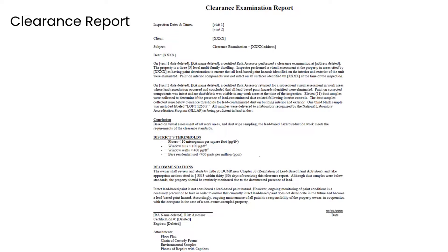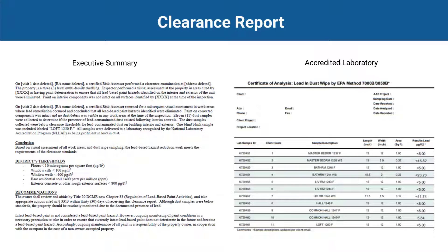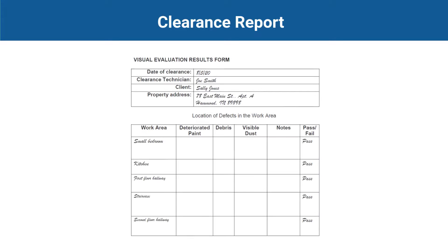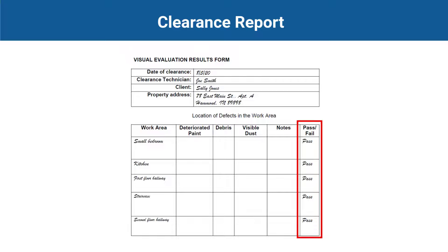The final report is the clearance report. The clearance examiner provides the client with the results of the clearance exam, and the report should clearly state if the unit passes or fails clearance. The report should include a summary suitable for communication with residents, as well as a complete file of the visual assessment forms and dust sampling results forms. The clearance examination should be stopped if the visual assessment fails, as failing visual clearance requires re-cleaning. If re-cleaning is required, a one-hour wait period is required before the clearance exam can be conducted.